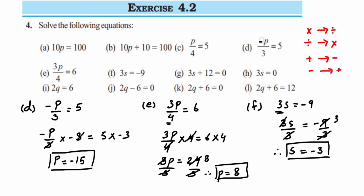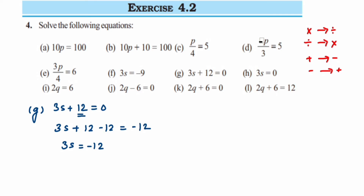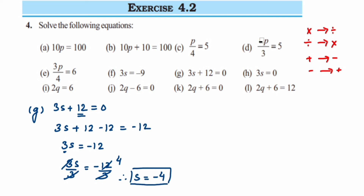Problem g: 3s + 12 = 0. First, remove the 12 — it's under addition, so subtract 12 on both sides: 3s + 12 - 12 = 0 - 12. Plus 12 minus 12 becomes 0, so 3s = -12. Now divide 3 on both sides: 3s/3 = -12/3. The 3s cancel: 12/3 = 4, so s = -4 is the answer.